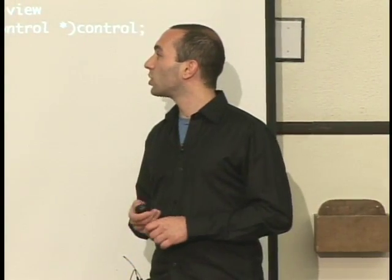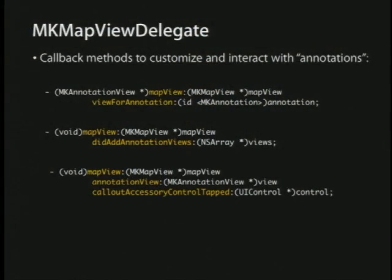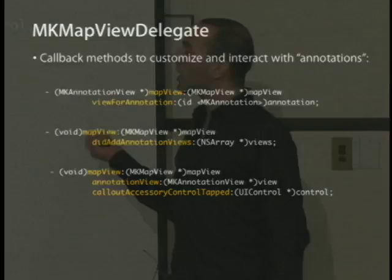The last delegate method is the annotation view callout accessory control tapped. One of the things you can do with an MK annotation view is you can customize it by adding callouts. If you tap on a pin on a map, sometimes it has the little red arrow — the same kind of arrow you see in some list views — that indicates if you tap on it that there's more information. So this will tell you if one of those accessory views is tapped.